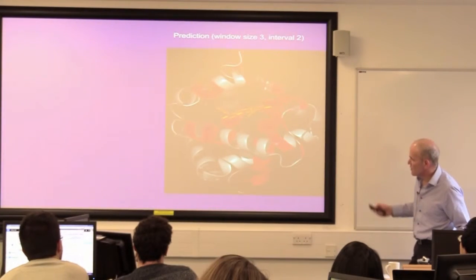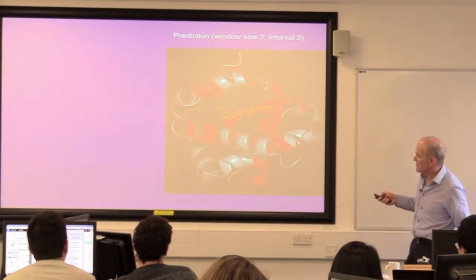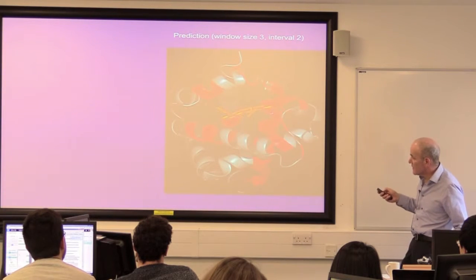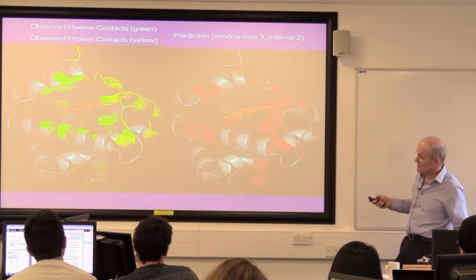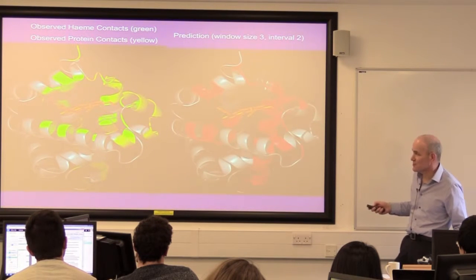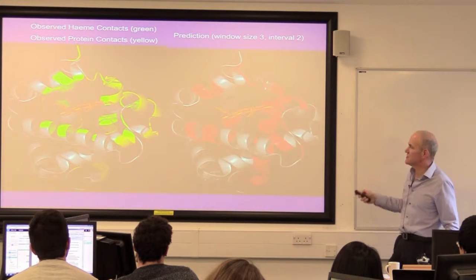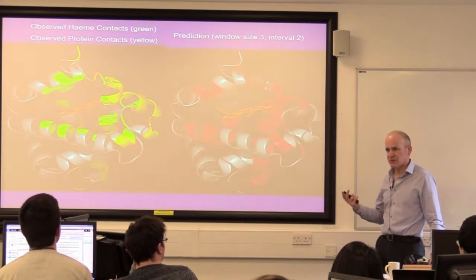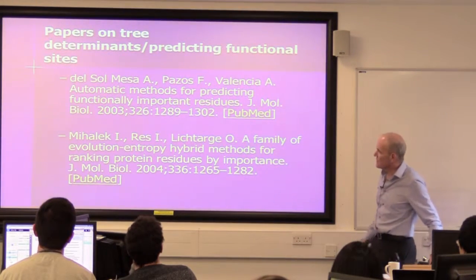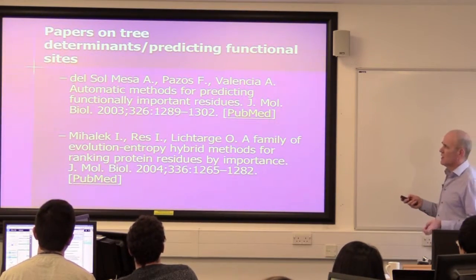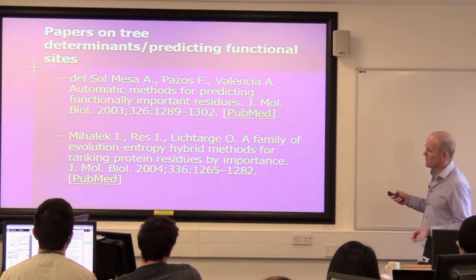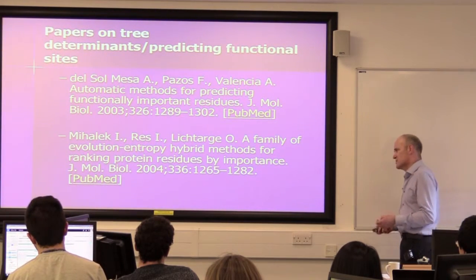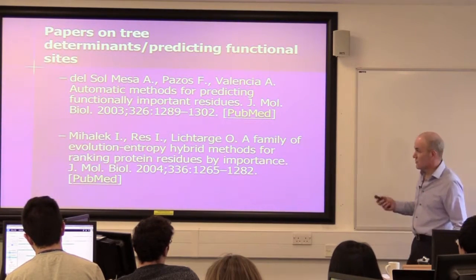This is for globins - a prediction of sites that are likely to be important for binding and packing in the core of the protein. By eye you can see that they're almost identical to the actual sites. This is a rather anecdotal example, but just to show the kinds of things you can do - you can make predictions about sites that are important in some way to the protein from looking at sequences. Quite a few groups have done work in this area. Alfonso Valencia's group have done quite a lot of work on this, and Oliver Lichtarge has this approach called evolutionary trace. These approaches are all similar in what they're trying to do.